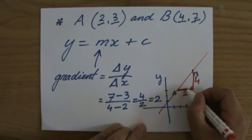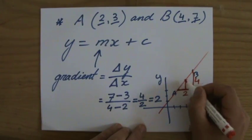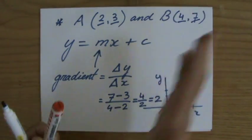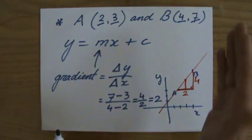That means that in one step, he goes two up. So the gradient is two. So I'm right. And it's positive two. One step to the right, two up. The gradient is two.